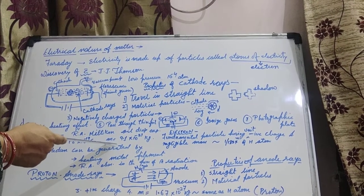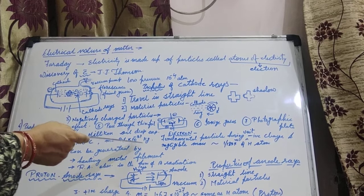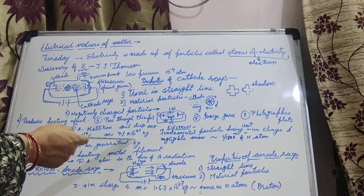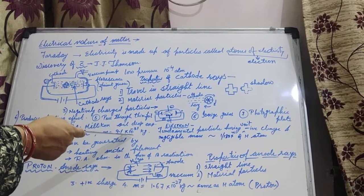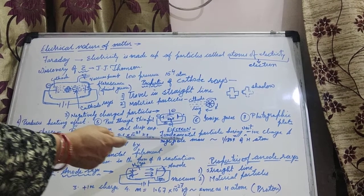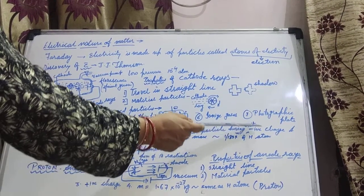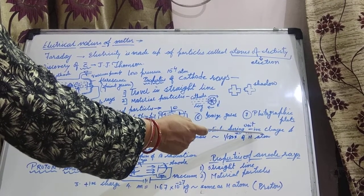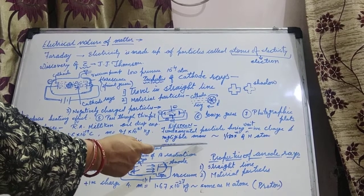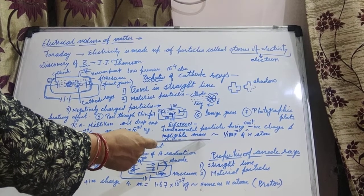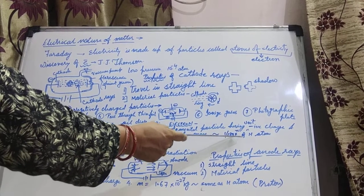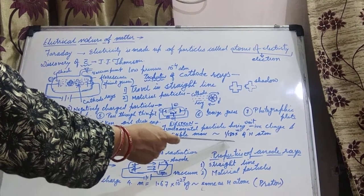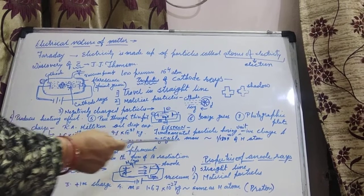The mass of electron is 9.1 into 10 to the power minus 31 kg, and this mass is considered as negligible mass. We can define electron as a fundamental particle having unit negative charge — unit meaning minimum charge which can be measured — and negligible mass. The mass of electron is about 1 by 1837th of the hydrogen atom, and that's why we take the mass of electron as negligible mass.